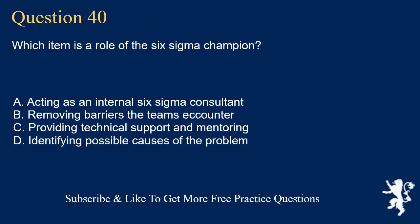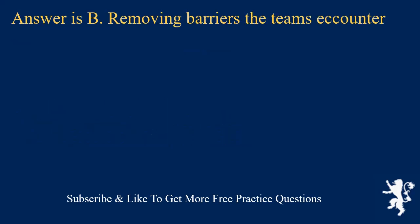Question 40. Which item is a role of the Six Sigma champion? A. Acting as an internal Six Sigma consultant. B. Removing barriers the teams encounter. C. Providing technical support and mentoring. D. Identifying possible causes of the problem. Answer is B. Removing barriers the teams encounter.